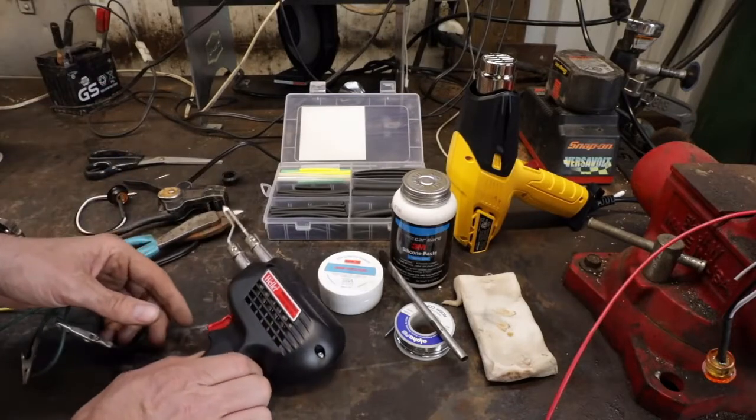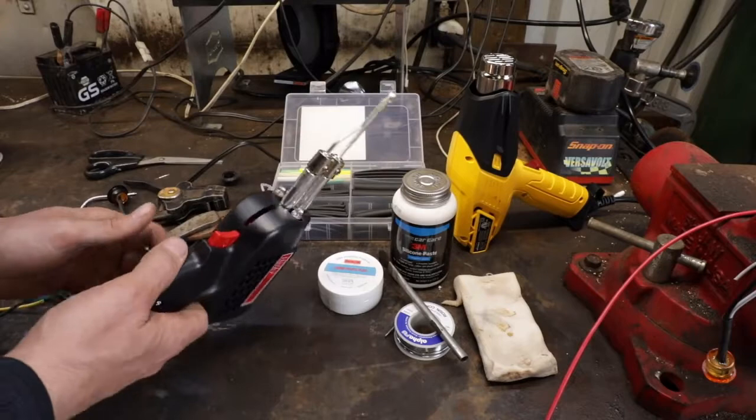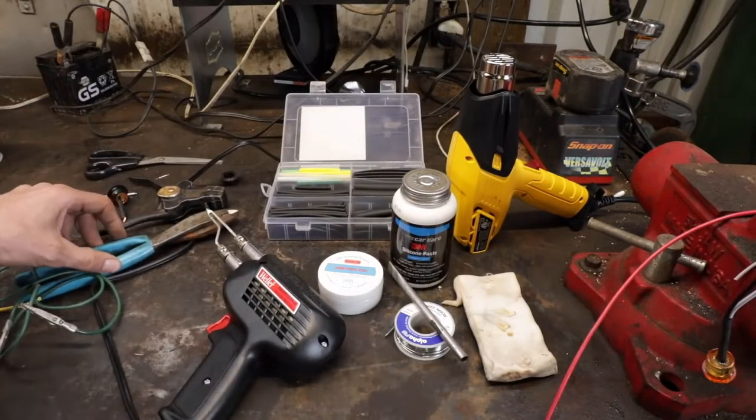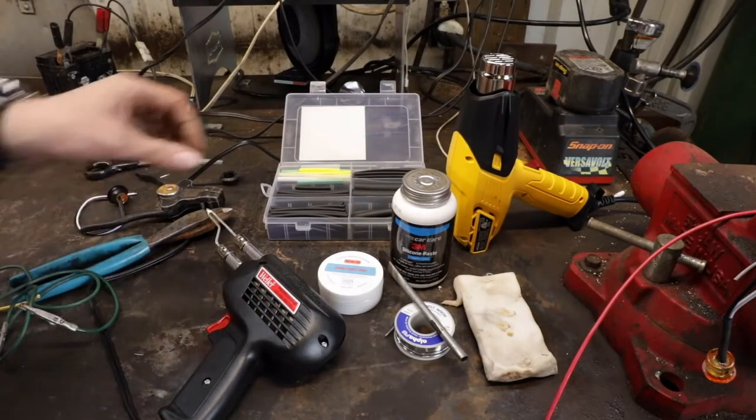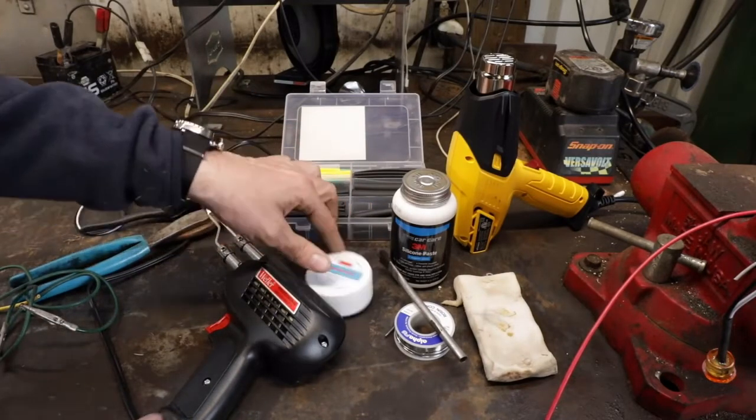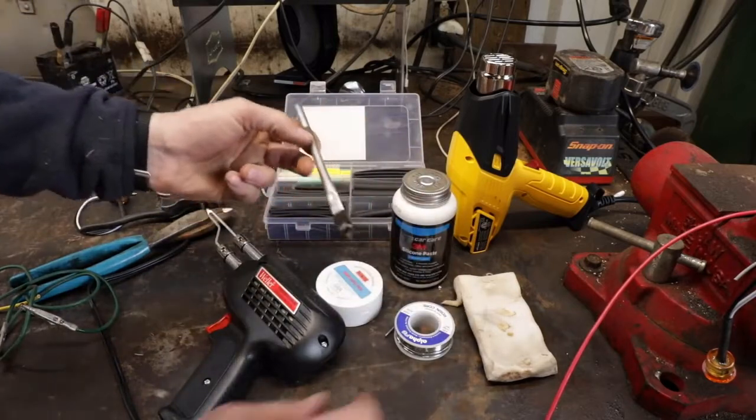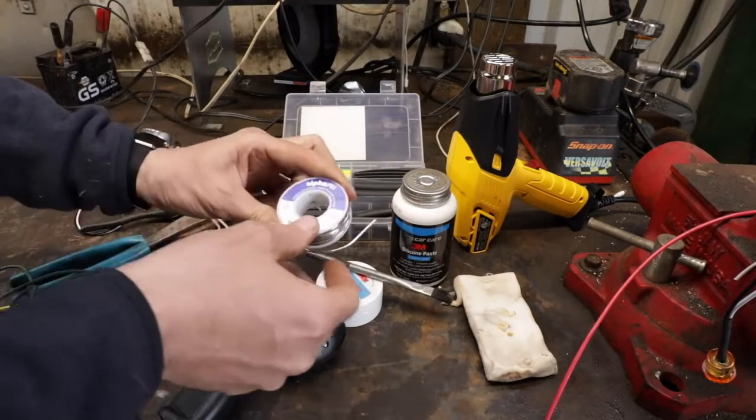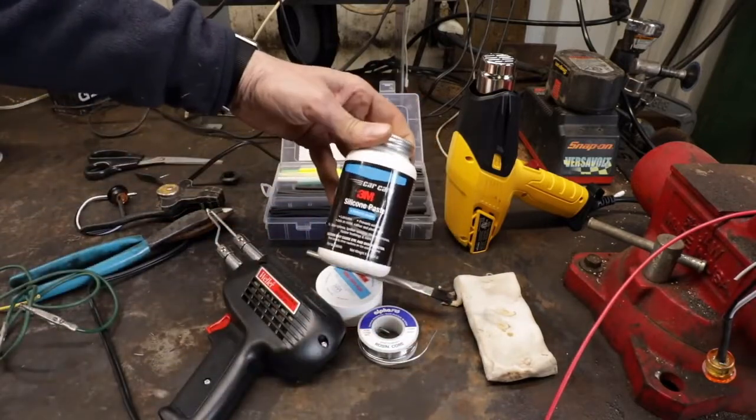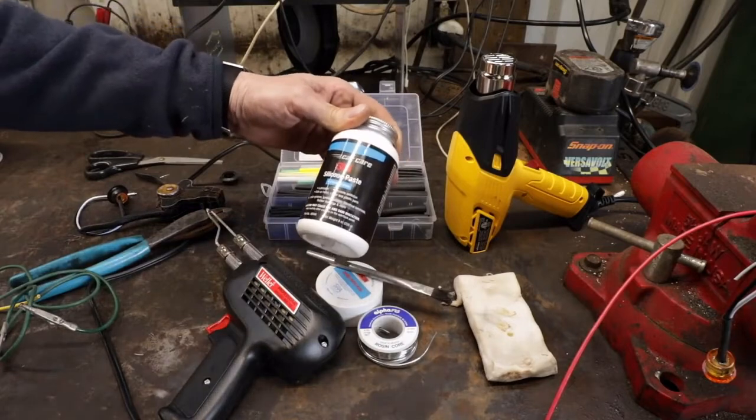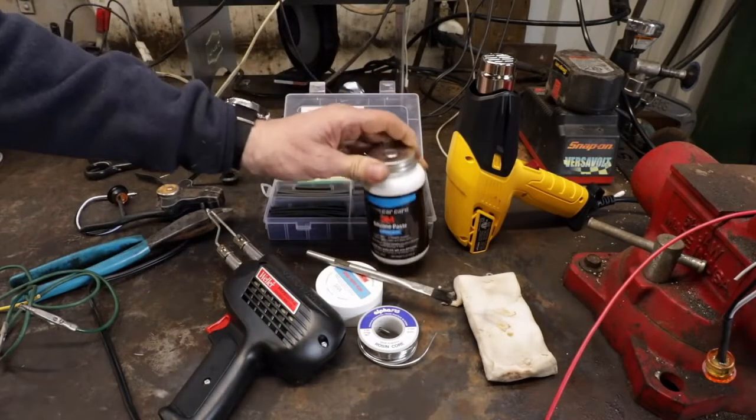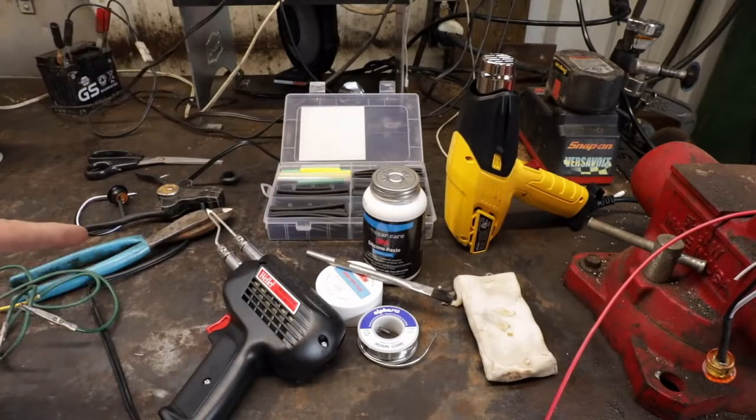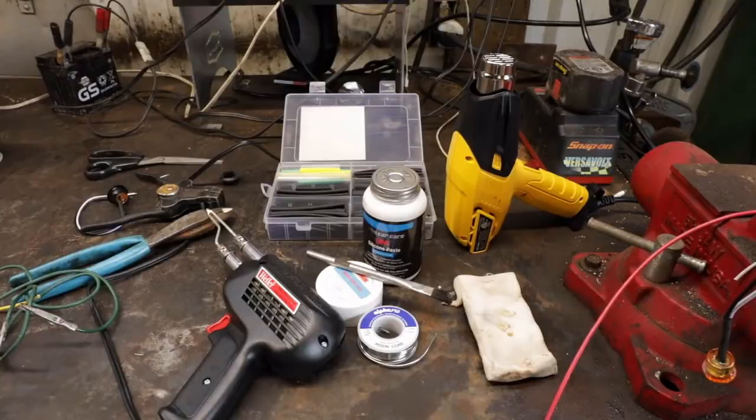Get yourself a soldering gun - you don't have to get anything fancy. These Wellers are good, probably in the $30-$40 range. You want some rosin paste flux, a little brush, and some rosin core solder. Don't use the solder used for plumbing - it's not the right stuff. This 3M silicone dielectric grease is amazing, as well as a good selection of shrink tubing.